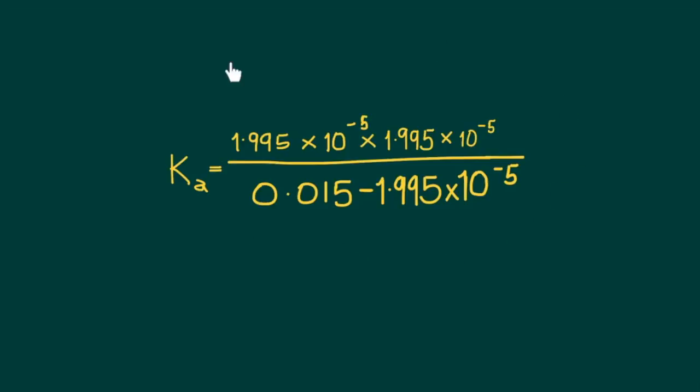To solve for Ka, the acid dissociation constant, we plug in the values for H plus, A negative which would be the same as H plus because for every H plus there is an A negative.